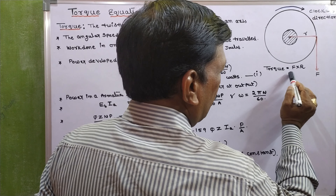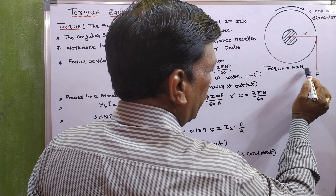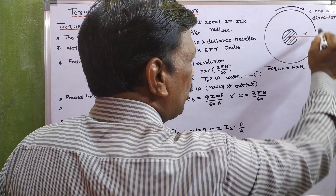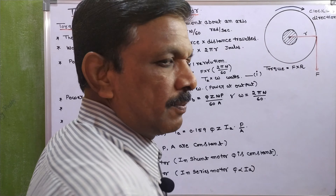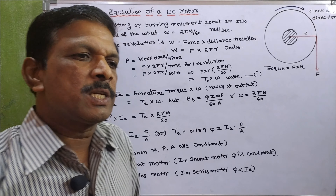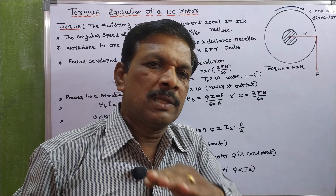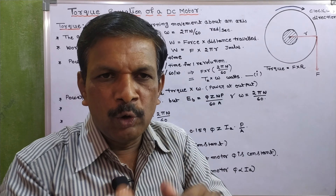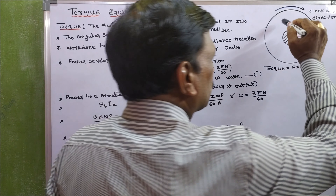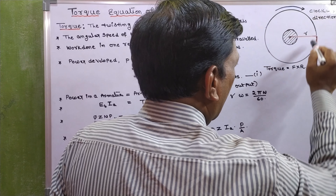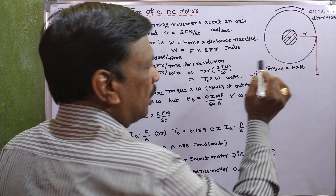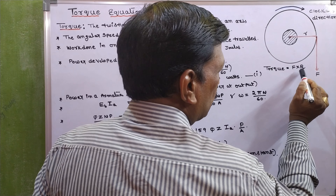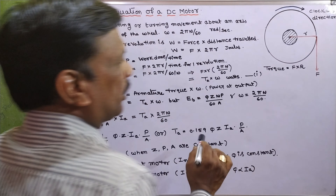Torque is equal to force into radius. Here the force is angular force. Actually, forces are of two types: one is linear force, another one is angular force. So the force here is in angular motion, and torque is equal to angular force into radius.